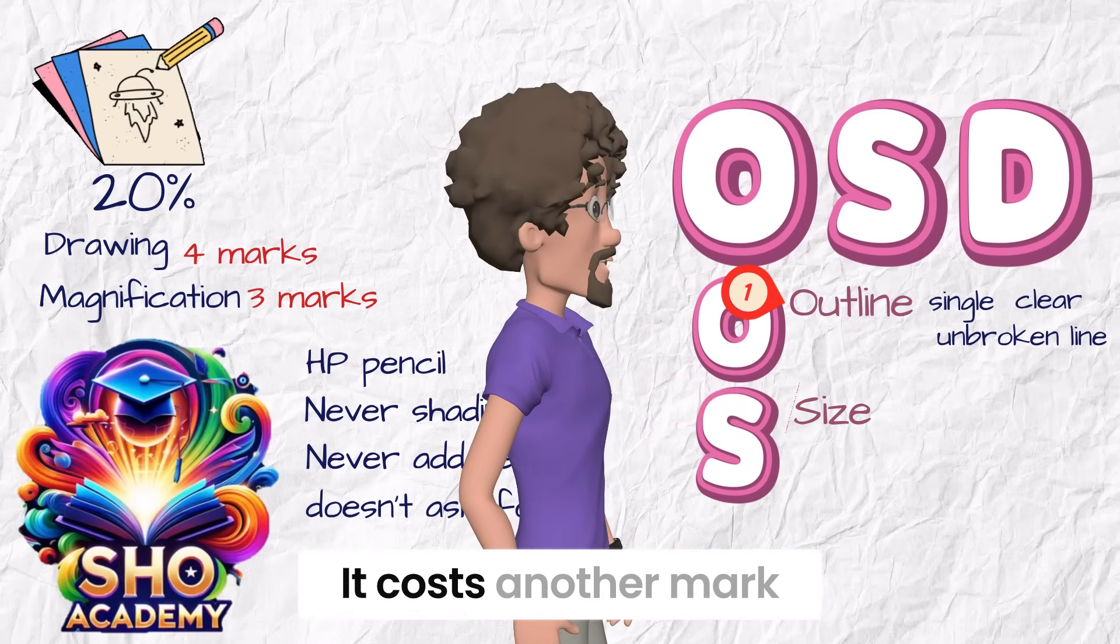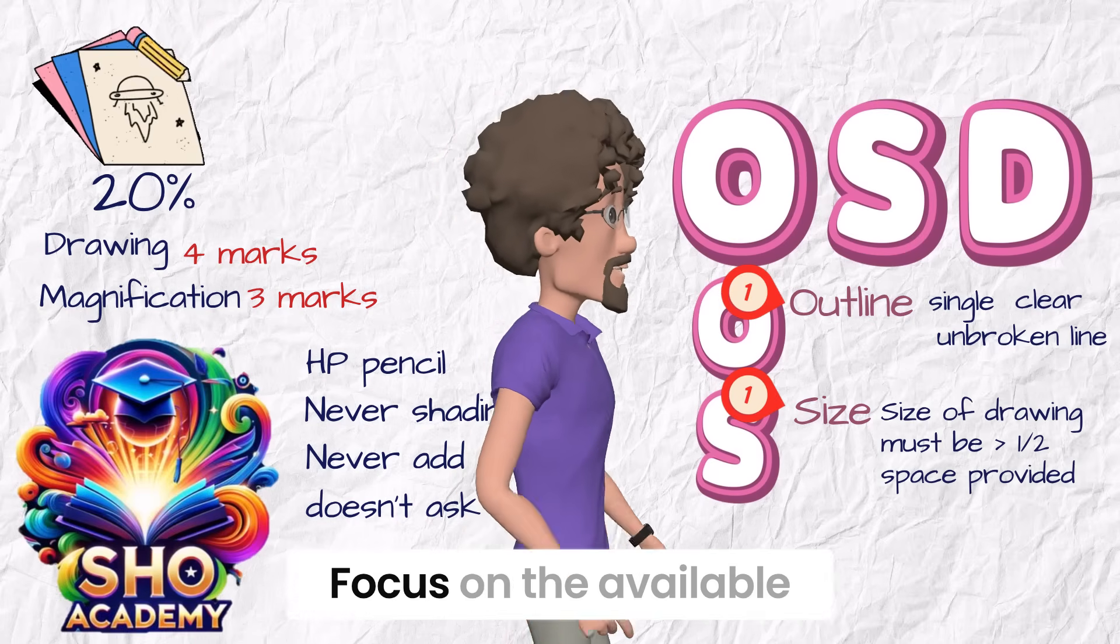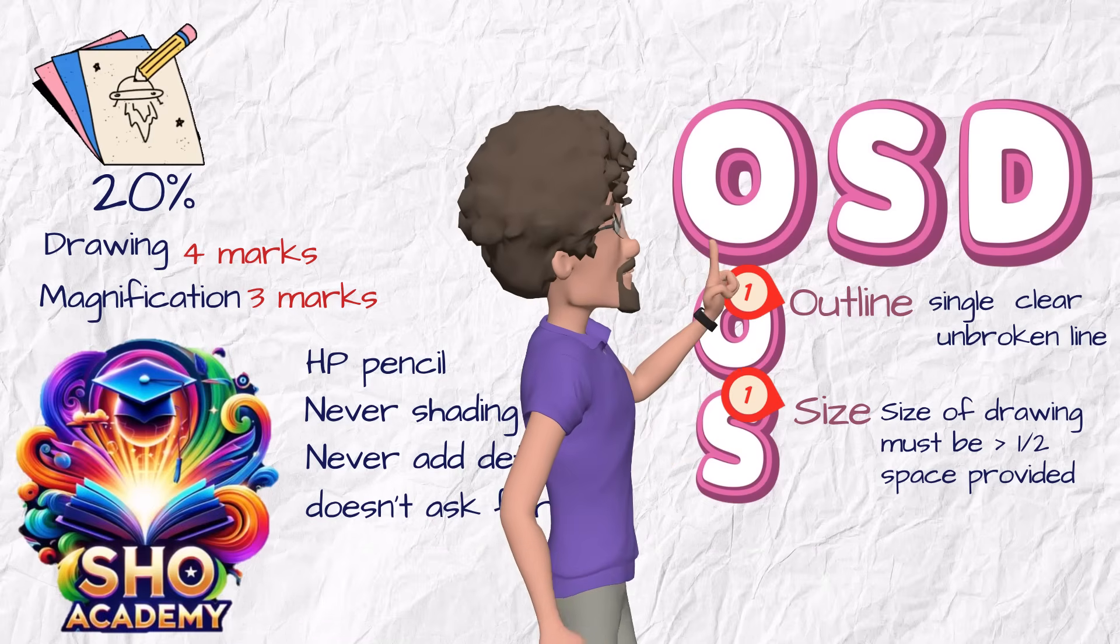S is for size. It costs another mark. Your size of drawing must be greater than half of the space provided. Focus on the available space and try to fill it. Tiny draw equals tiny mark.